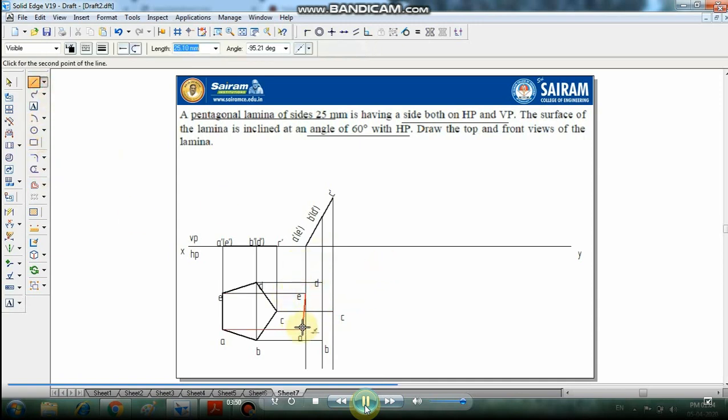With the help of line command, join ea, ab, bc, cd, de. Select this and make a group with 0.5 mm thickness. This is the top view after the inclination. Make the dimension, check it 25, and the angle of inclination to HP is 60 degrees.